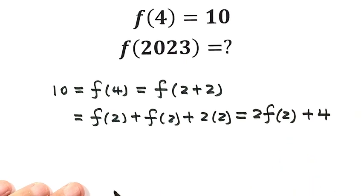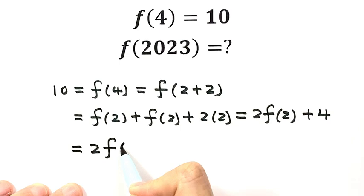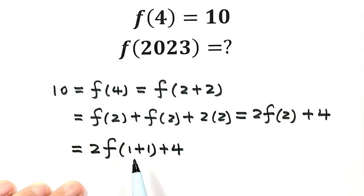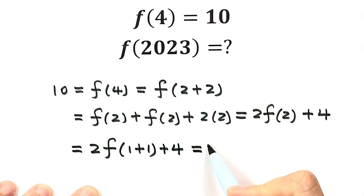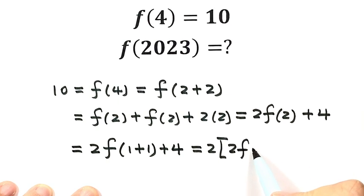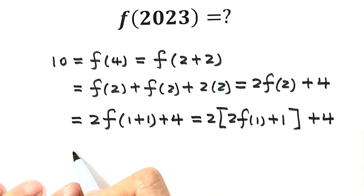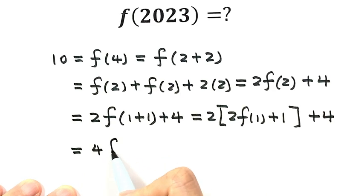For f(2), we can write it as f(1+1). Using the first condition again, f(1+1) = f(1) + f(1) + 1×1 = 2f(1) + 1. Substituting back, we have 2(2f(1)+1) + 4, which simplifies to 4f(1) + 6.